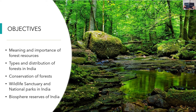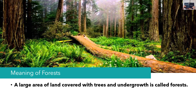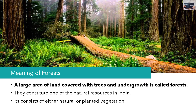To start with, we'll know what is the meaning of forest. A large area of land covered with trees and undergrowth is called a forest. They are one of the most important natural resources in India. It consists of either natural or planted vegetation. Natural vegetation means plant cover that has not been disturbed over a long period of time — it can be grasses, shrubs, trees all growing on their own. Planted vegetation are plants or trees planted by man in order to increase the forest area.